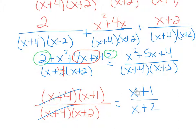Do not cancel the x's — they are terms, pieces of binomials. Binomials can only cancel with other whole binomials; you cannot cancel terms. So x plus 1 over x plus 2 is your final answer.